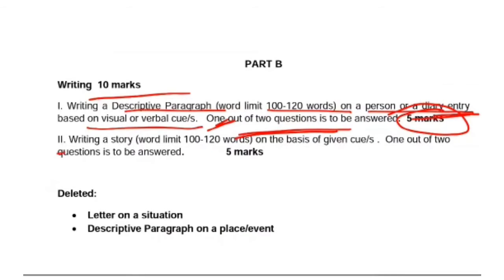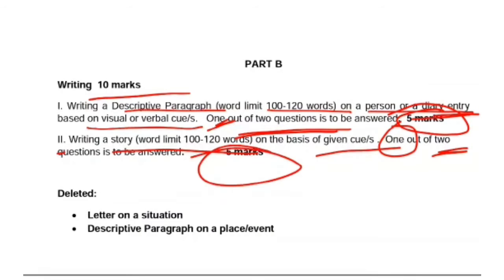The second writing task is story writing, with a word limit of 100 to 120 words. Some hints will be given. Two questions will be asked and you have to attempt one, for which you will get five marks.